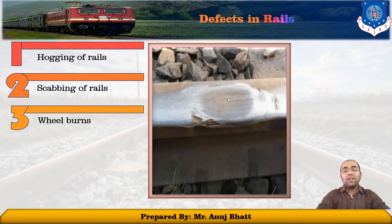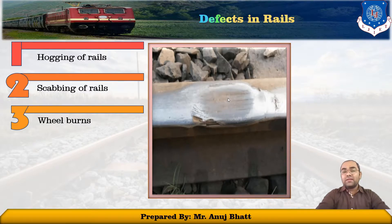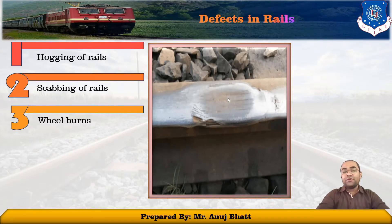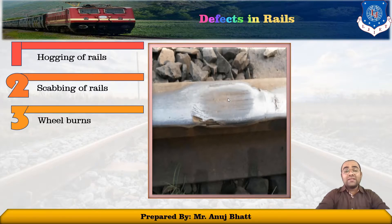The next defect is wheel burns. Wheel burns are caused by the slipping of the driving wheel of locomotives on the rail surface. As a consequence, extra heat is generated and the surface of the rail gets affected, resulting in a depression on the table known as the wheel burn effect. These are generally noticed on steep gradients or where there are heavy incidences of braking.